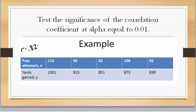Remember that we're trying to decide if 0.82 is close enough to positive one to conclude that we have a positive linear relationship.